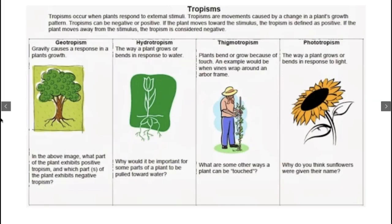We studied phototropism, geotropism, and hydrotropism. Looking at the stem: phototropism - the stem moves upward, while the root moves downward. The stem is negative geotropism and the root is positive geotropism because it moves downward toward gravity. In light, the stem is positive phototropism because it moves toward the light source, while the root is negative phototropism.